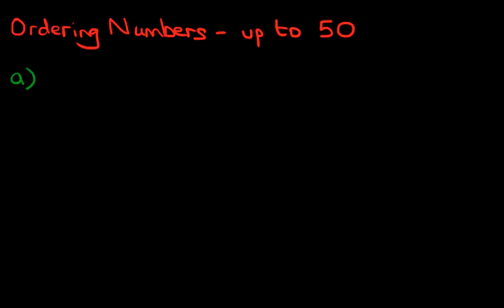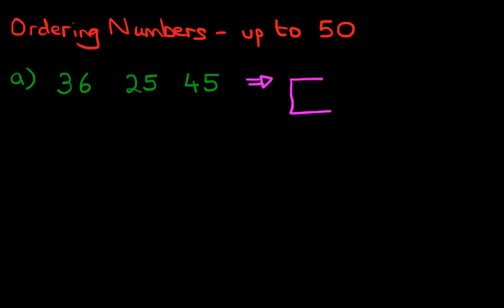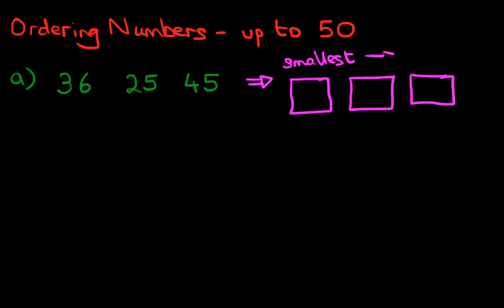Let's have a look at our first example. We've got these three numbers: 36, 25, and 45. The question is, can you place them in order from the smallest number to the largest number? First things first, let's draw out our boxes. We've got three numbers, so we've got three boxes to fill in — you'll see this very commonly in workbooks and when you take exams. So we've got the smallest going to the largest.